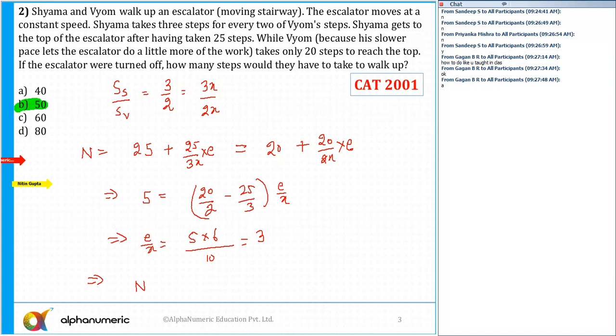Substitute it back. I'll get N is equal to, in any of the equations, in the first equation: 25 plus 25 by 3 into E by X is 3. So the total number of steps in the staircase is 50.